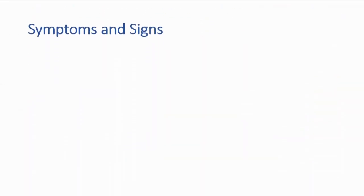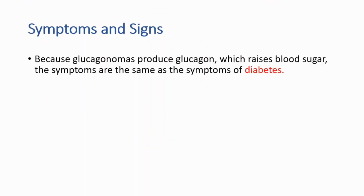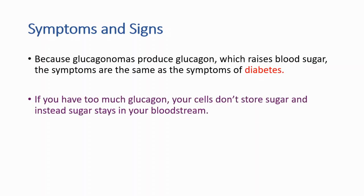The symptoms and signs will be the same as diabetes, because this tumor produces glucagon, which raises blood sugar — same as diabetes. And if you have too much glucagon, your cells don't store sugar; instead, sugar stays in your bloodstream.